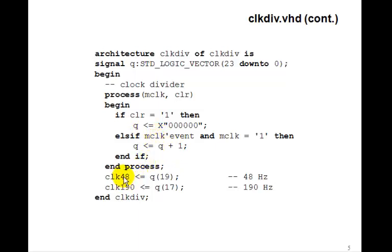And then our outputs, we'll tap off two of them. Clock 48 is Q sub 19. Clock 190 is Q sub 17. So, when you use clock div, you can tap off however many you need. Sometimes you'll need only one, maybe clock 190. Many of our programs later on will use 25 megahertz clocks, in which case we'll use a clock 0. That gives us a 25 megahertz clock. And you can use whichever ones you need here.